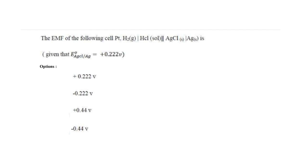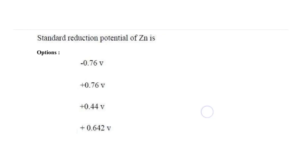Next question: the EMF of the cell Pt | H₂ | HCl solution | AgCl | Ag. The EMF value of E°(AgCl/Ag) is given. The options were +0.222 volts, -0.222 volts, +0.44 volts, and -0.44 volts. The answer is +0.222 volts.